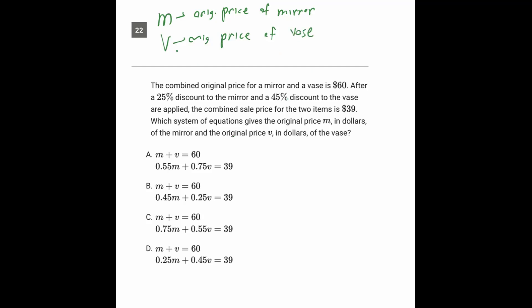So right now, after writing those out, we can easily say M plus V has to be 60 because the original price combined was 60.